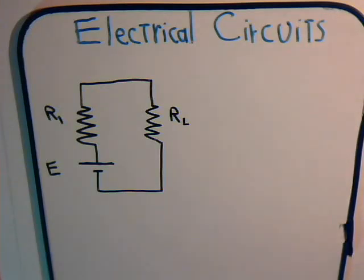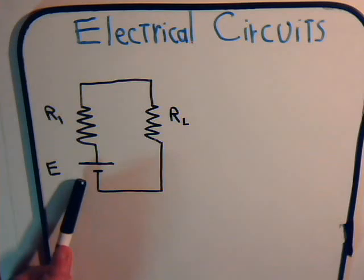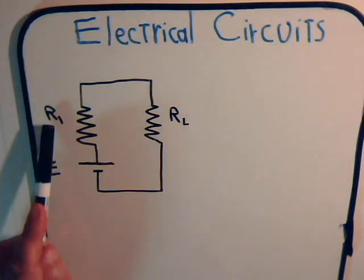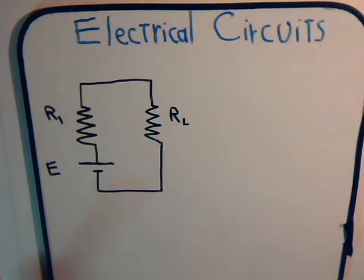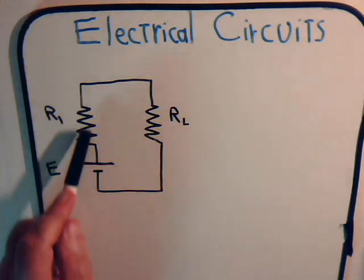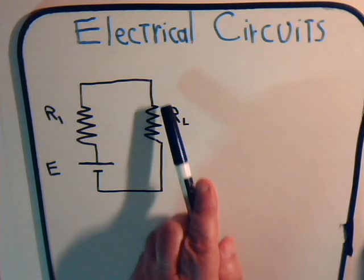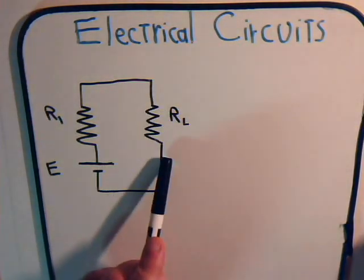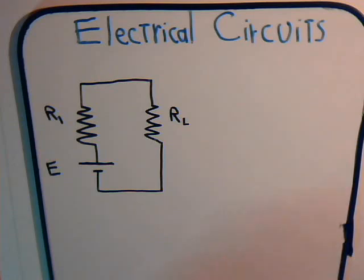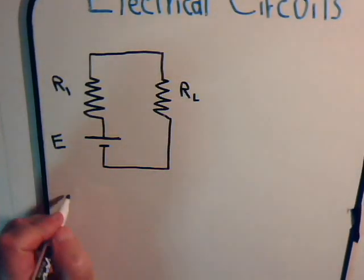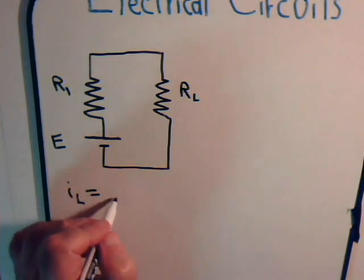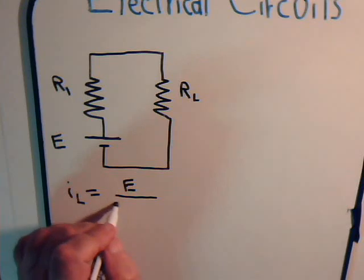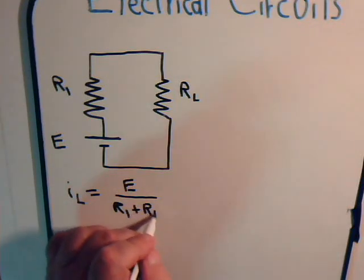Let's say that we had a simple circuit where here we have a voltage source, and in series with it is this resistor. This resistor could just be the internal resistance of our voltage source — any internal resistances are always in series with the source. And then here we have a load resistor. We want to know what's the current that goes through this resistor. That current IL will equal the voltage divided by the total resistance in the simple series circuit, so we have R1 plus RL.